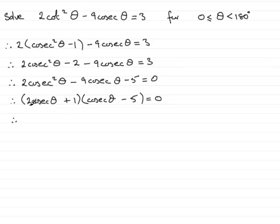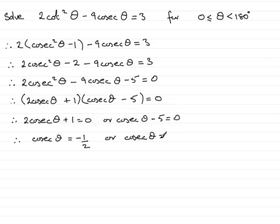That means we have 2 factors being multiplied together equaling 0. So either of those factors would equal 0. Taking the first factor, it would mean that cosec theta would equal minus a half. Or, in this case, if I add 5 to both sides, cosec theta equals 5.